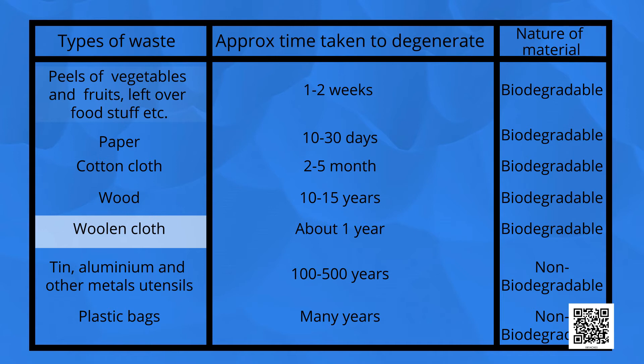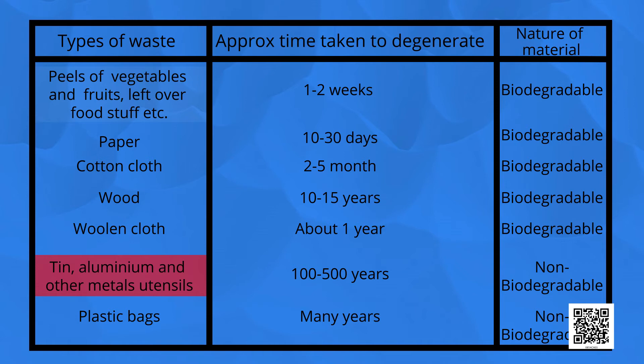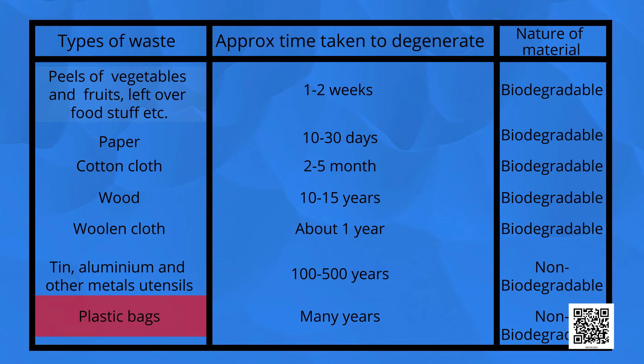Tin, aluminium and other metal cans take 100 to 500 years to degenerate, and plastic bags take 500 to 1000 or more years to degenerate. So we conclude that metallic containers and plastic bags are both non-biodegradable.